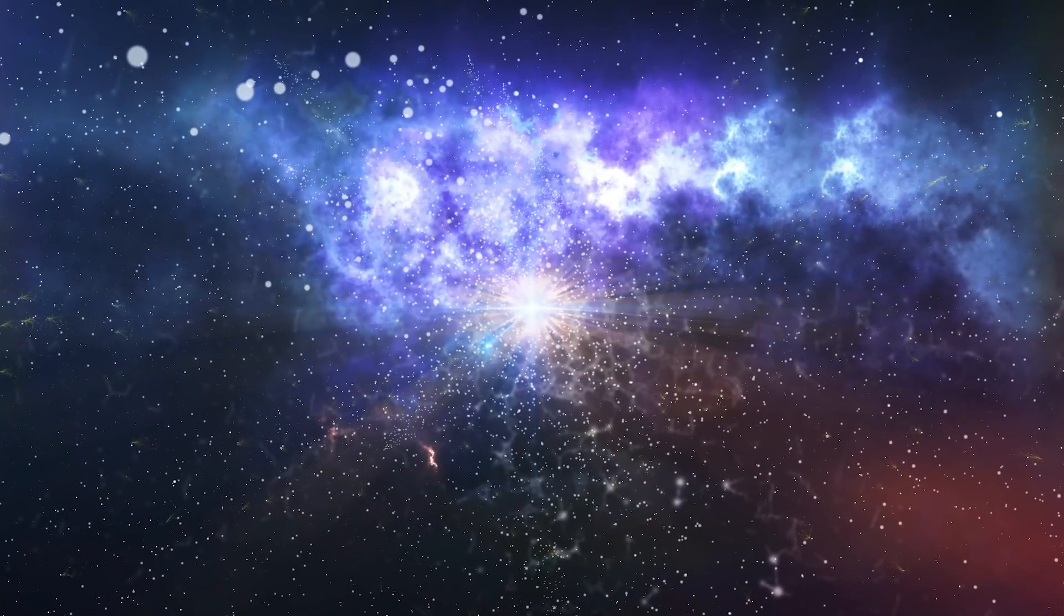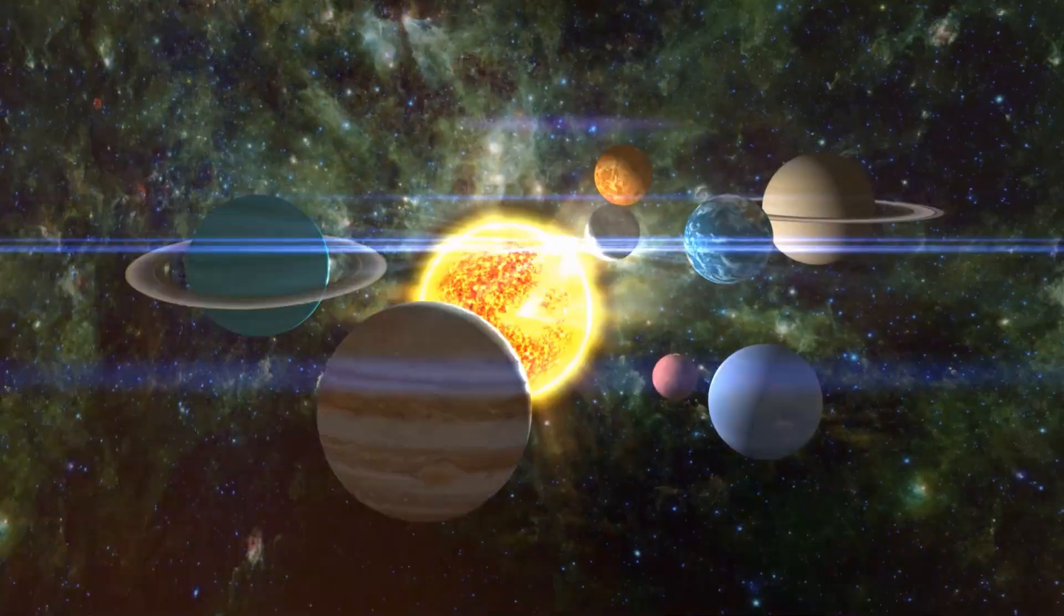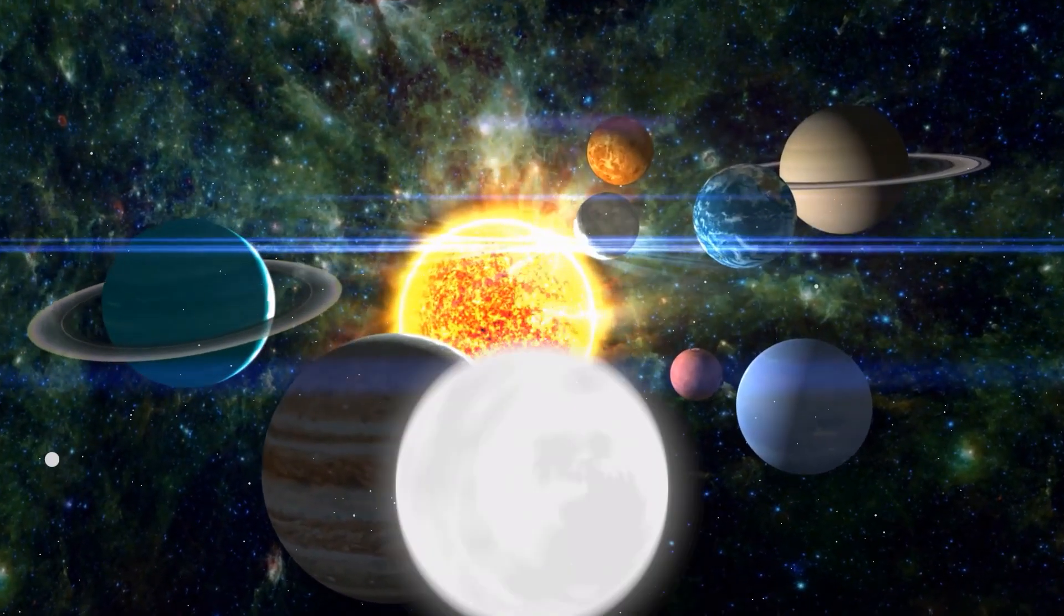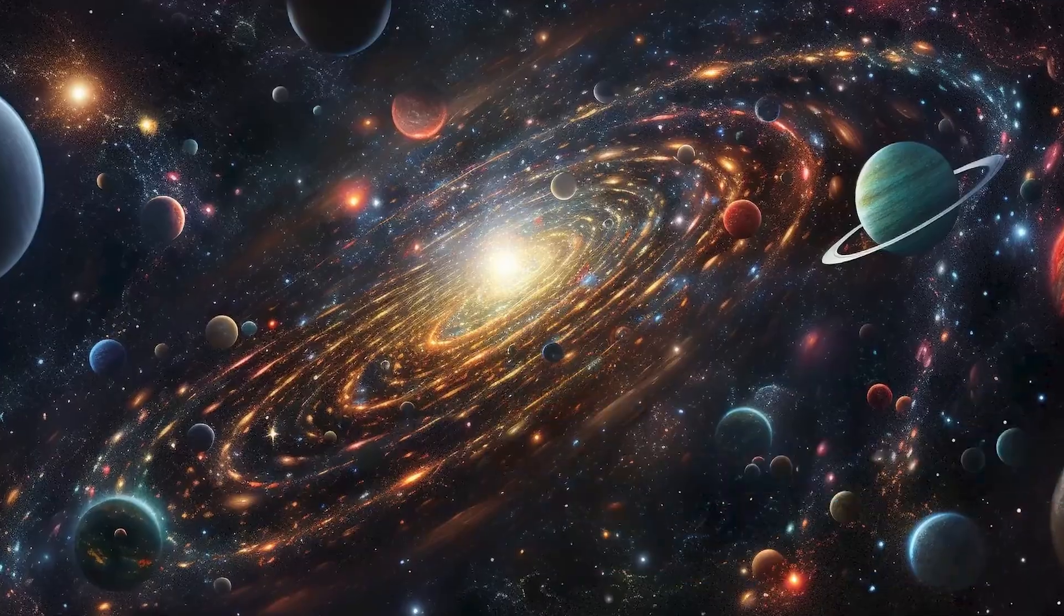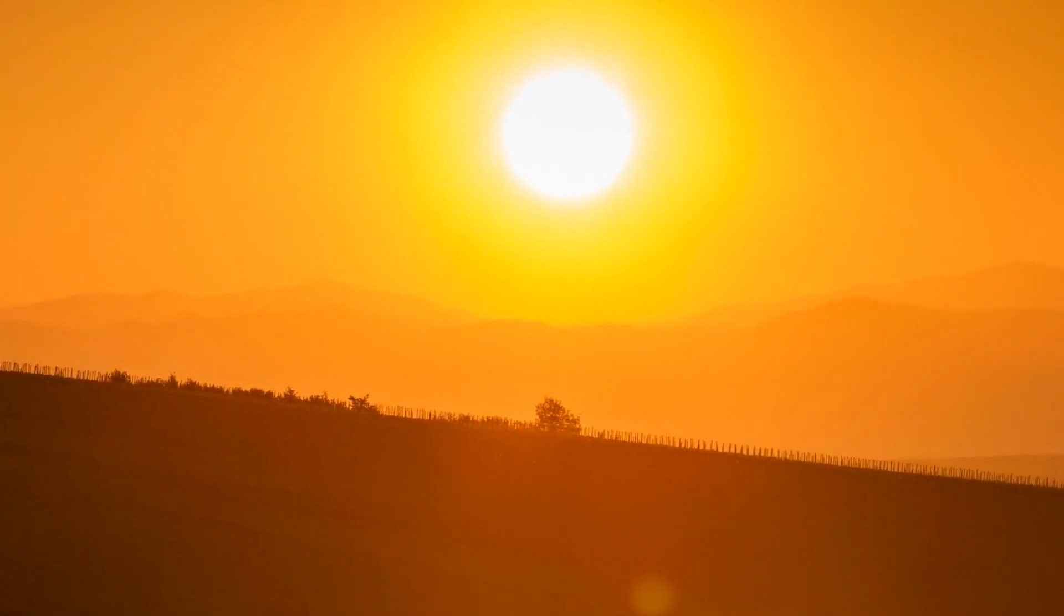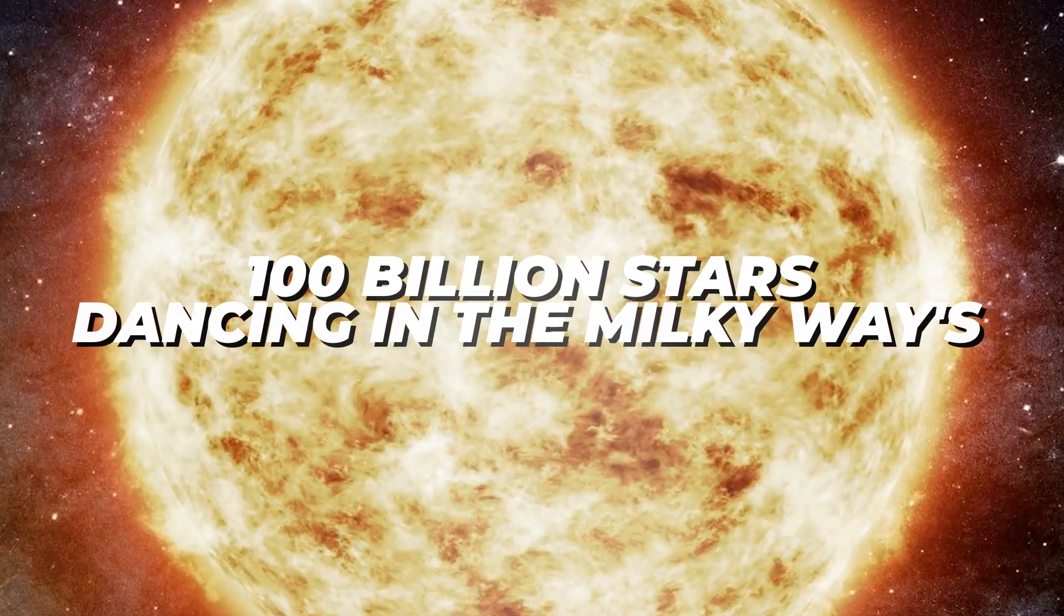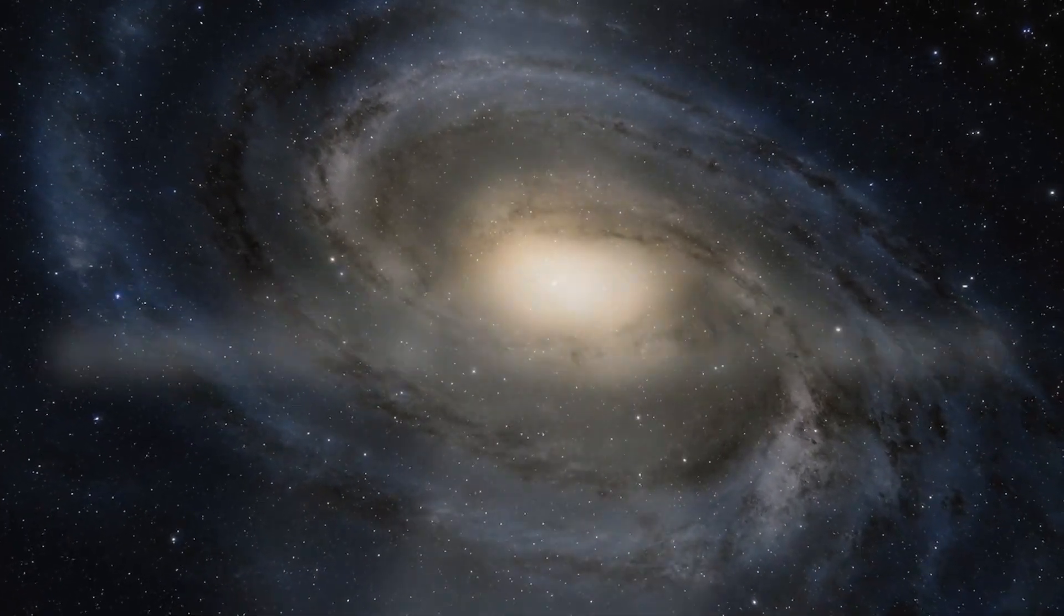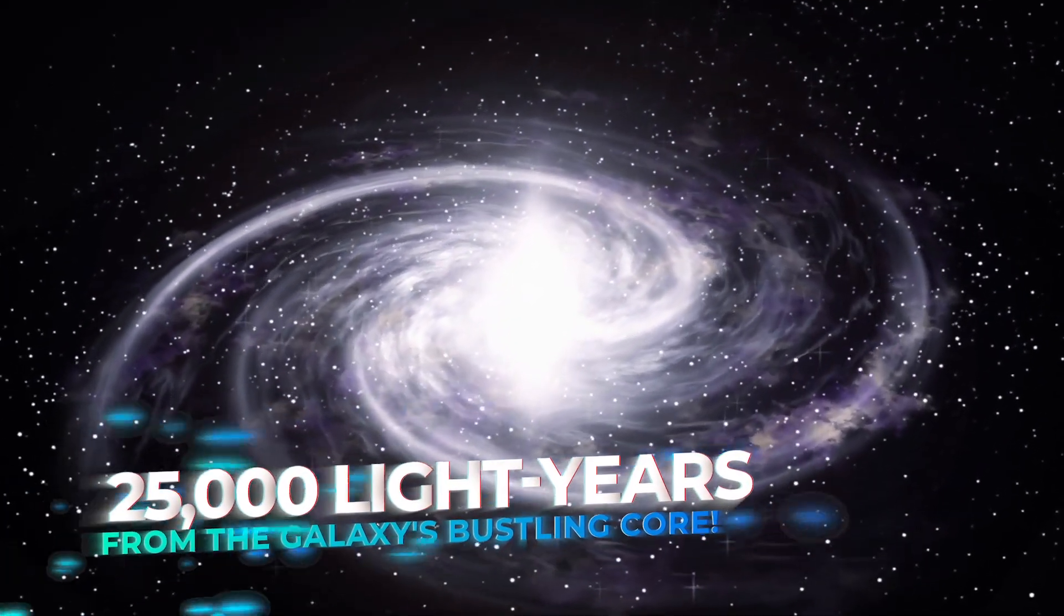Imagine this, about nine billion years after the universe's first epic act, the Big Bang, our solar system threw a birth party. Now, it's a sprightly 4.6 billion years young. And here's the fun part. Our sun, the ultimate spotlight, is just one of the staggering 100 billion stars dancing in the Milky Way's grand cosmic ballroom, swirling about 25,000 light-years from the galaxy's bustling core.